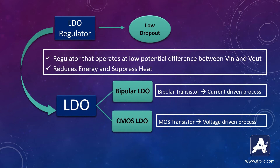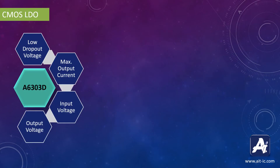We will now see the A6303D CMOS LDO IC in detail. A6303D is a low noise positive voltage LDO regulator manufactured using CMOS processes, specially designed for power management units in portable electronic applications.